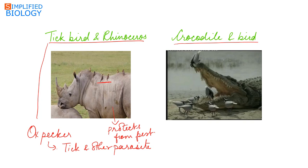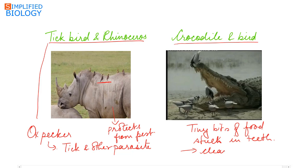Another example is the crocodile and a bird. The bird feeds on the tiny bits of food present in the crocodile's mouth, in turn helping to clean the mouth so that it is free of any infection.